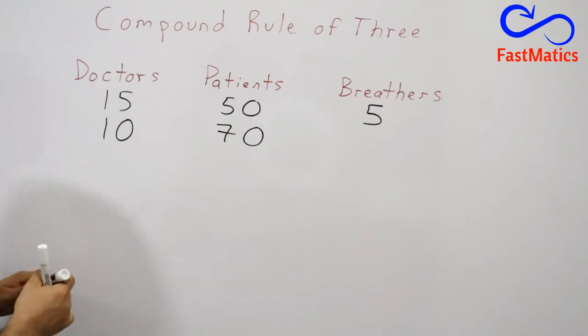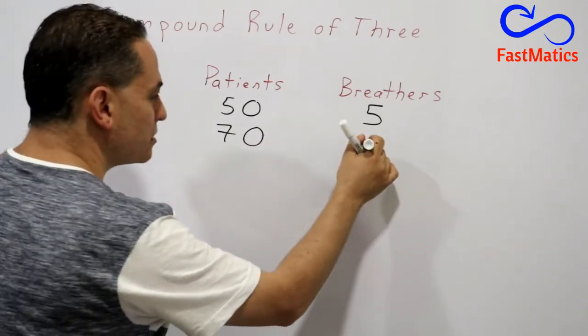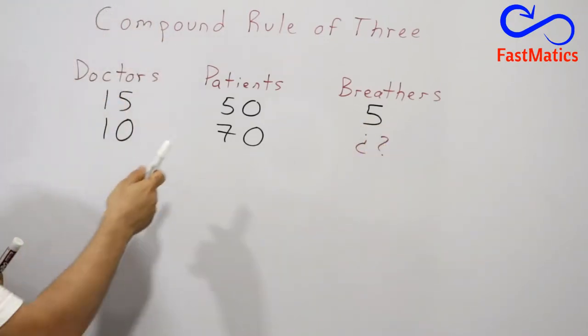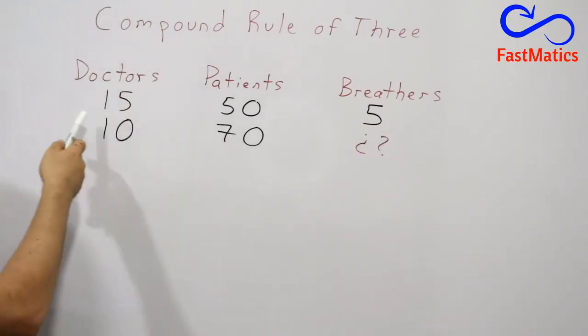And the question is, how many breathers are we going to need to take care of 70 patients with only 10 doctors? Let's think: if we have more doctors, we need less breathers. But now we have less doctors. What can we do to solve it?